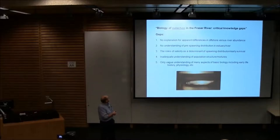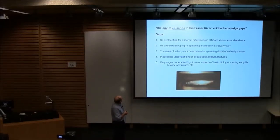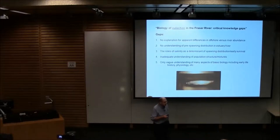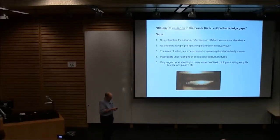The Knowledge Gaps list is in part a reflection of that. The first gap is there's no explanation for the apparent differences between offshore and river abundance. Offshore, off the coast of BC on the shelf, there are really thousands of tons, millions and millions. In the rivers, there's very much fewer by two orders of magnitude. And there's no explanation for that.